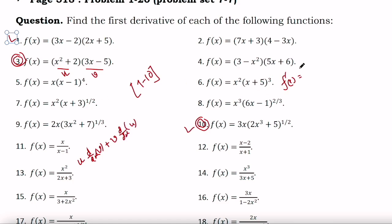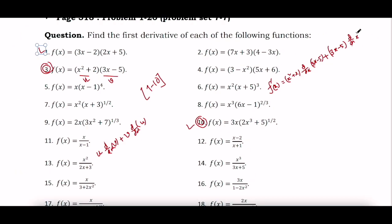f prime x equals (x squared plus 2) into the derivative of (3x minus 5), plus (3x minus 5) into the derivative of (x squared plus 2).